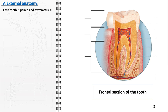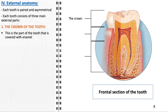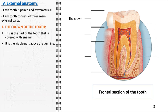Each tooth's external structure is uniquely designed for durability and function, maintaining an asymmetrical shape corresponding to its counterpart in the opposite dental arch. The crown of the tooth is coated with enamel, the hardest substance in the human body. Visible above the gum line, its glossy white exterior plays a crucial role in cutting, grinding, and crushing food. The enamel provides resilience, protecting the tooth's inner layers from decay and the wear and tear of daily use.